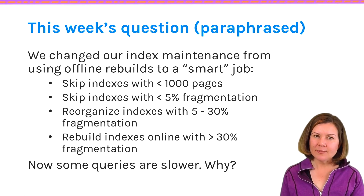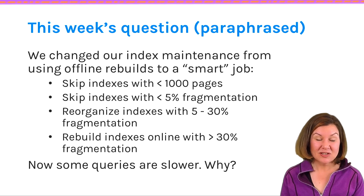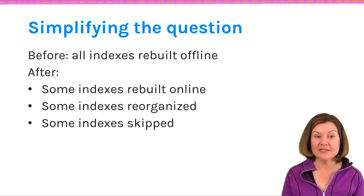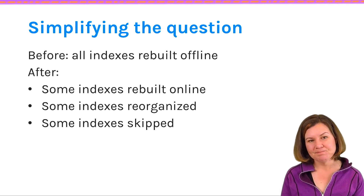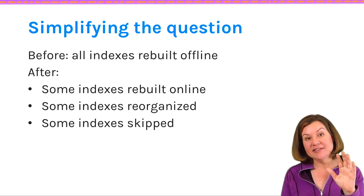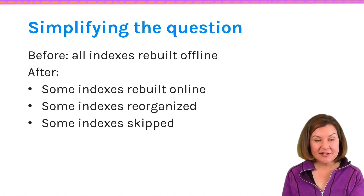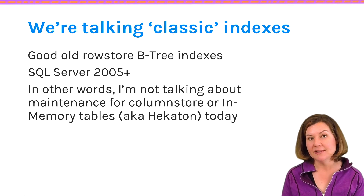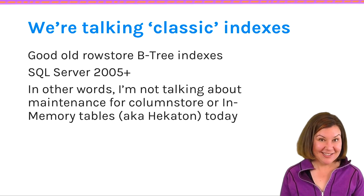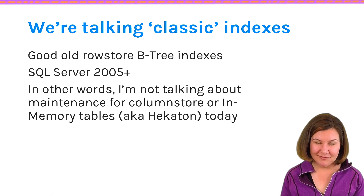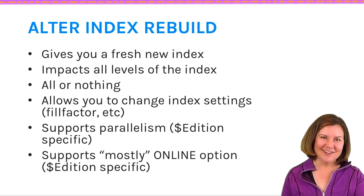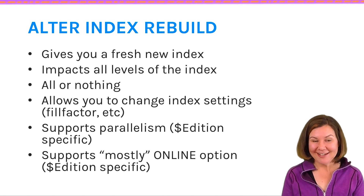But now that the new job is in place, some queries in production are slower. Could this be caused by the index maintenance job? Could it be because our job got smarter? So simplifying the question: we went from rebuilding all indexes offline to having some indexes rebuilt online, some reorganized, and some skipped. I'm thinking of classic B-tree indexes in SQL Server 2005 and higher — row store indexes, not column store or Hekaton rebuilds.